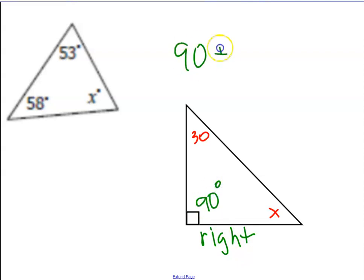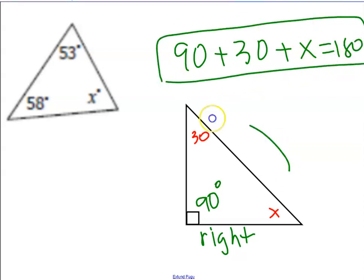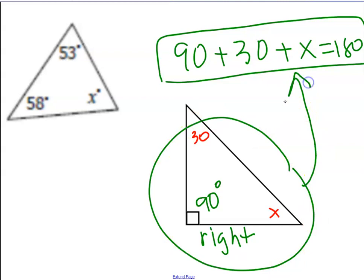Hopefully you understand that's a right angle. And a right angle means that you measure 90 degrees. So 90 plus 30 plus x has to equal 180. That's my theorem. That's what we're learning today.